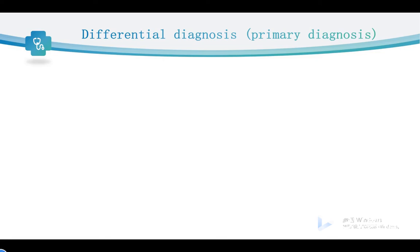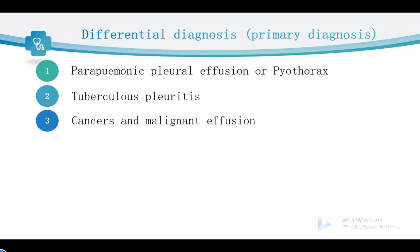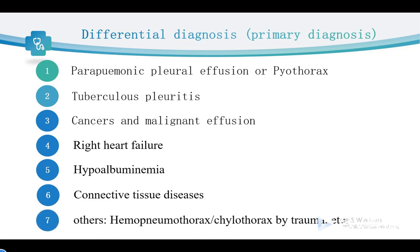The differential diagnosis is usually about the primary disease of the pleural effusion. The first one is parapneumonic pleural effusion or pyothorax, caused by bacterial infection. Tubercular pleuritis is caused by tuberculosis. Primary cancers in the pleura or pleural metastasis from other cancers. Right heart failure. Any cause of hypoalbuminemia. Connective tissue disease. And others.